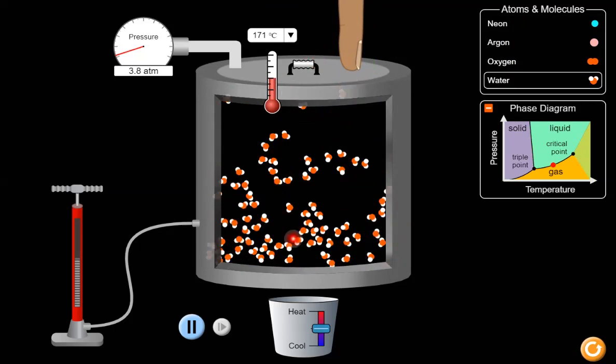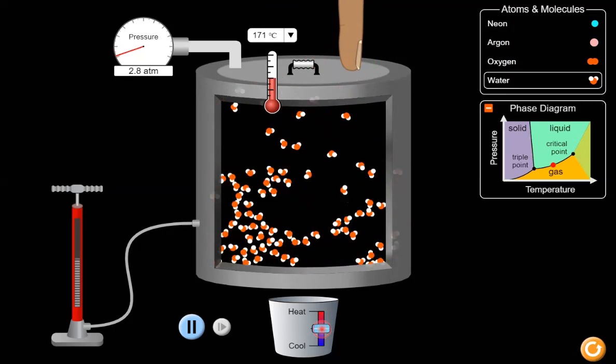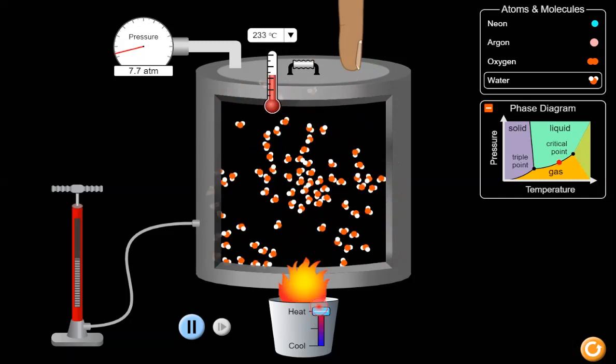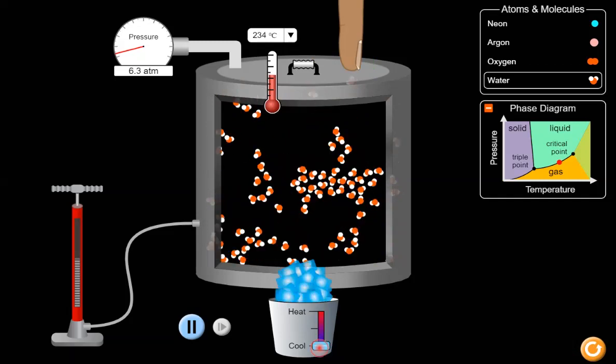Then we can add heat at the bottom by moving it up, and we see the flame, or we can remove heat with the ice.